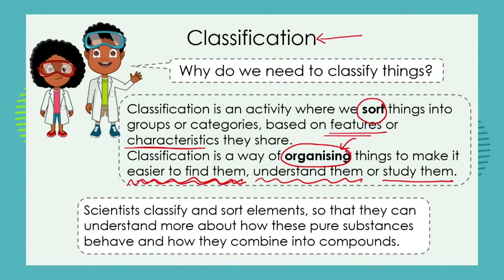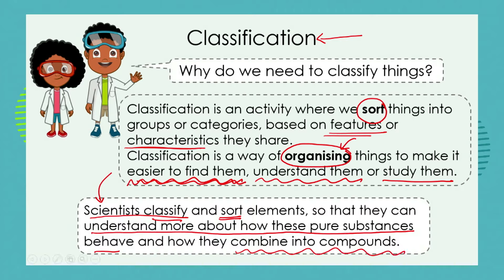Let's take this everyday idea of classification and look at scientists and elements, because that is what our focus is at the moment. Scientists classify and sort elements so that they can understand more about how these pure substances behave and how they combine into compounds. Once scientists started discovering many elements, they saw that some behave similarly to each other and started organizing them. In our next lesson we'll look at what classification system they came up with, but today we're going to play around with the idea of classification and have a little bit of scientific fun.